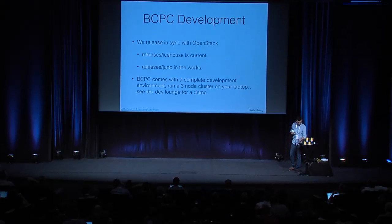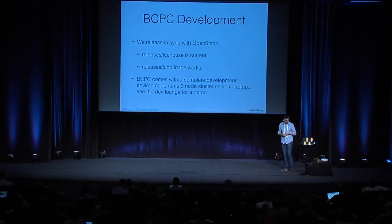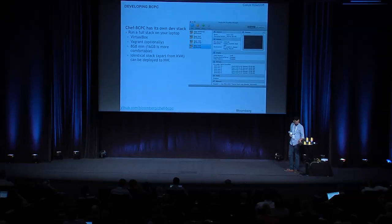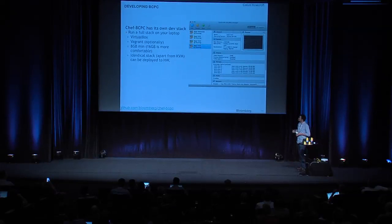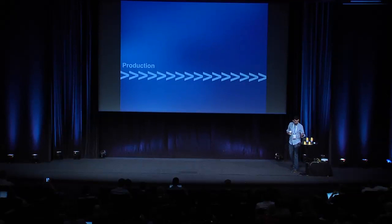A note about our development: we do a release cycle that tries to match OpenStack's release cycle. Our current production release is Icehouse, and we are working on Juno — that comes out a few months after each OpenStack release. You can actually run an entire BCPC stack on your laptop. This laptop is running one — a three-node setup with one head node with the entire stack, two compute nodes, and a bootstrap node. You can go to GitHub and spin one up.